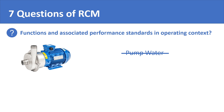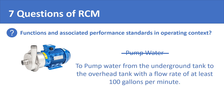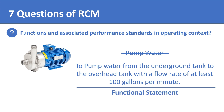A pump's function will be to pump water from the underground tank to the overhead tank with a flow rate of at least 100 gallons per minute. Now this is a proper functional statement in the context of reliability centered maintenance. It clearly describes what the pump needs to do and also lays down the performance standard in the operating context.